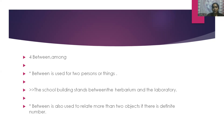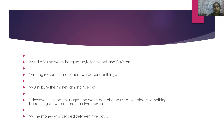Between and among: between is used for two persons or things. For example: the school building stands between the herbarium and the laboratory. Between is also used to relate more than two objects if there is a definite number. For example: India lies between Bangladesh, Bhutan, Nepal and Pakistan. Among is used for more than two persons or things. For example: distribute the money among five boys. However, in modern usage, between can also be used for more than two persons. For example: the money was divided between five boys.